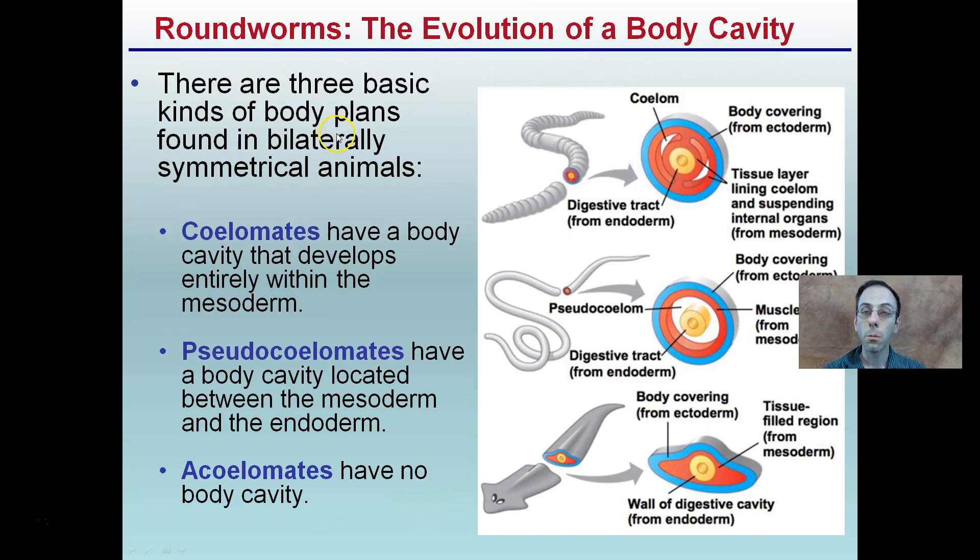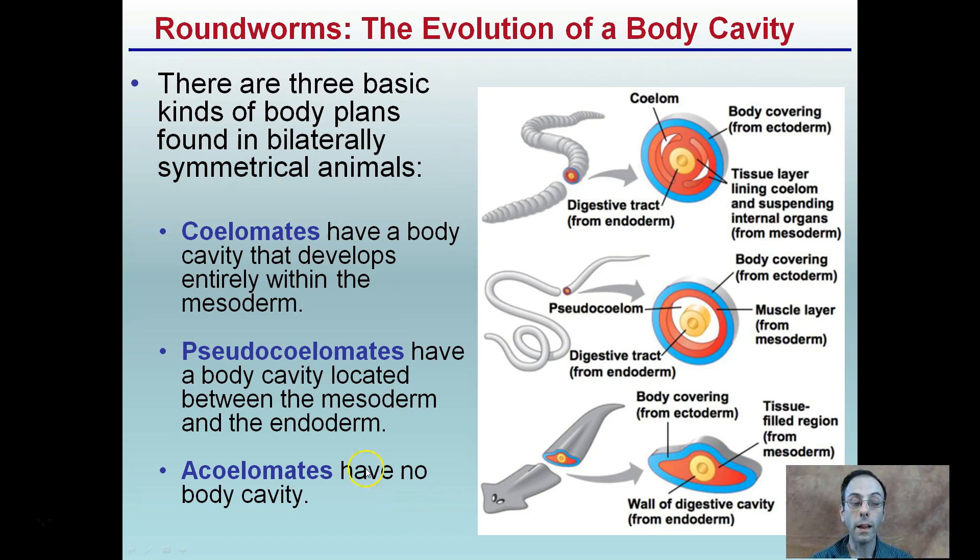Now, roundworms and that body cavity — if you've been watching these videos in order, we talked about acoelomates initially. They have no body cavity; these are our flatworms. We're progressing up now to our pseudocoelomates, which have a body cavity located between the mesoderm and the endoderm. These are our nematodes.